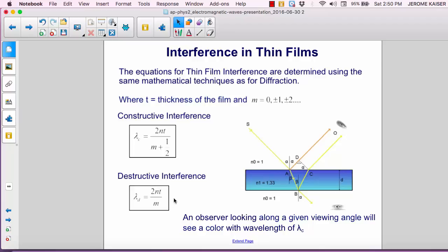Destructive interference occurs in a similar situation. This time the destructive interference is given by 2nT divided by m. So an observer looking along a given viewing angle will see a color with wavelength of lambda c.